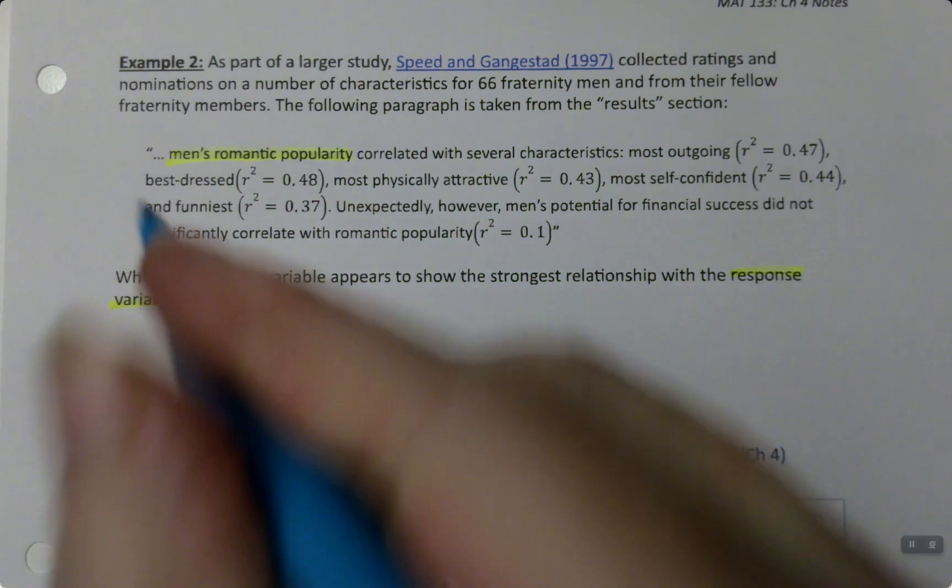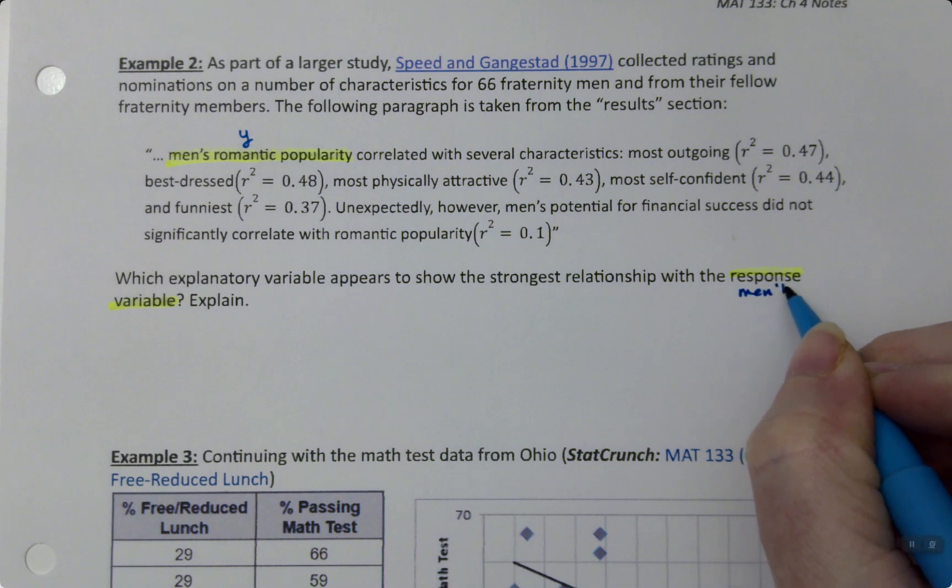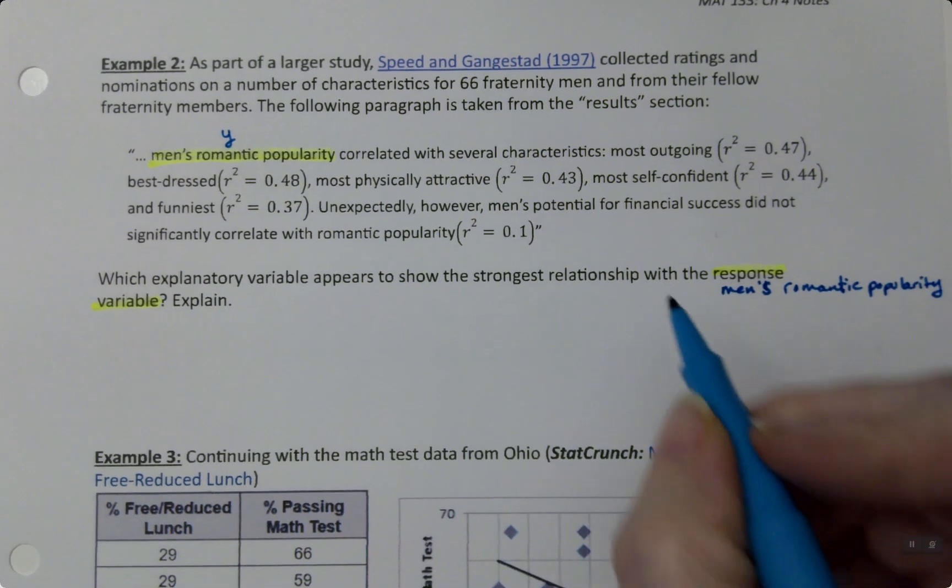You can see there are several characteristics, and this is written out in paragraph form, which is not always the way we see this. Sometimes we see it in a chart or table, but here we're seeing it in a paragraph, which is fine.